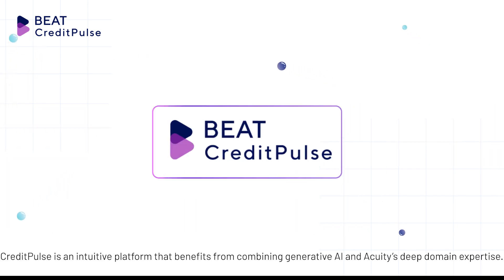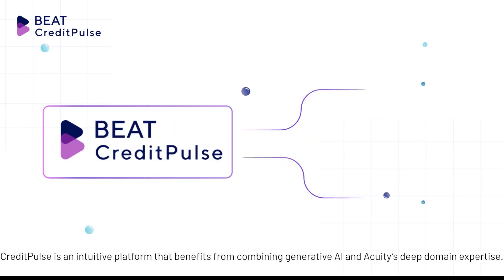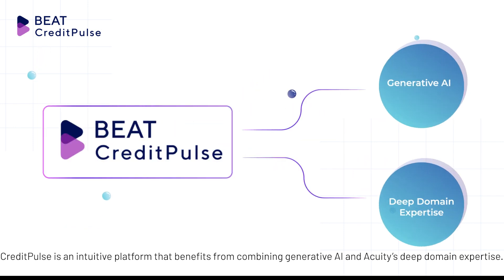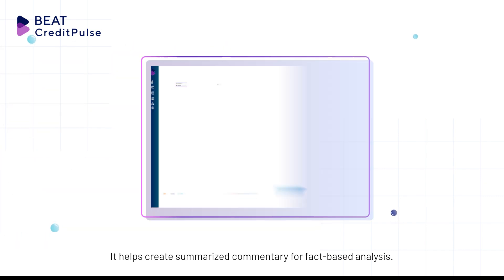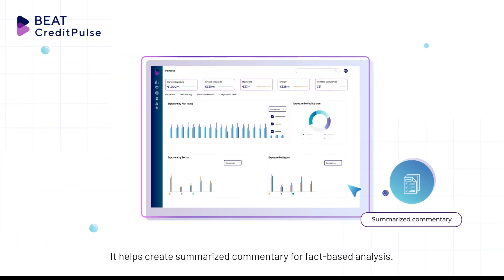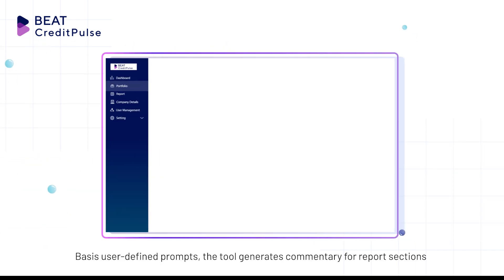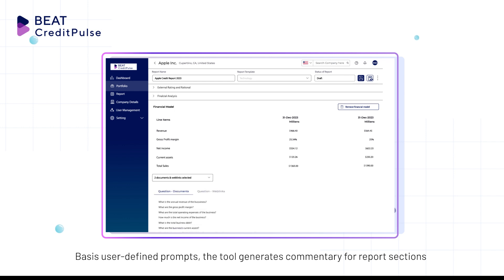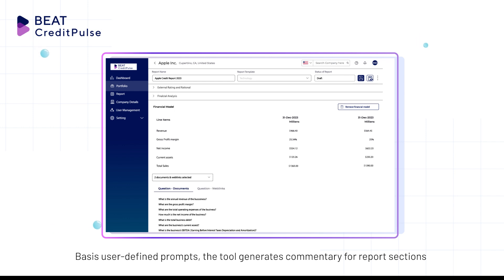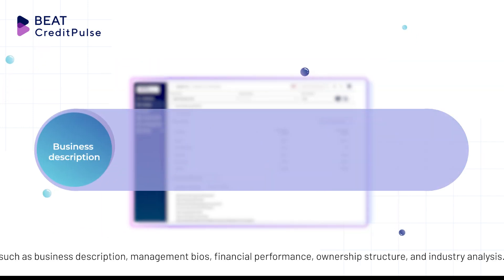Credit Pulse is an intuitive platform that benefits from combining generative AI and Acuity's deep domain expertise. It helps create summarized commentary for fact-based analysis. Based on user-defined prompts, the tool generates commentary for report sections such as business description,